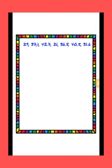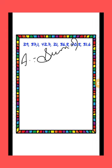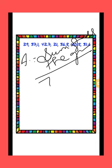Now see the next question: 29, 37.1, 42.7, 21, 36.8, 40.5, and 31.6. First of all, we will write the formula of average, which is equal to sum of all the given quantities divided by total number of quantities.